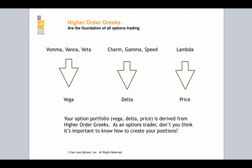And then you have your Theta, which I don't have on the screen. And then most traders are aware of Gamma, which is actually a second order Greek.